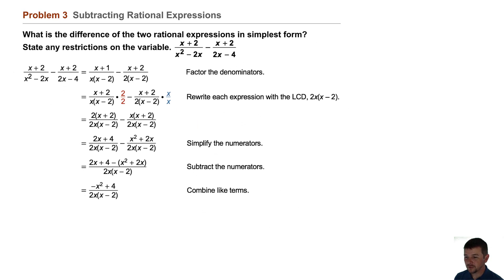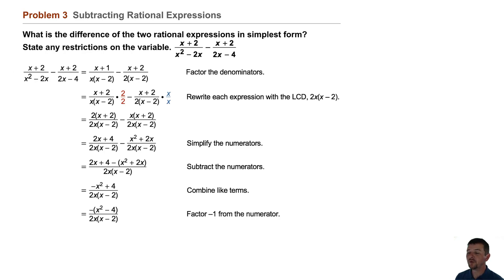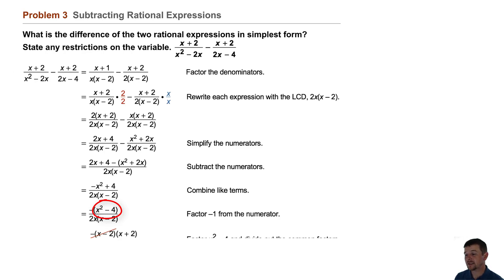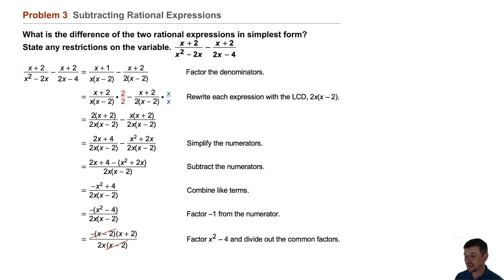In order to further reduce, we can factor a negative 1 from the numerator. When we do that, we get the negative of x squared minus 4 over 2x times x minus 2. Note the numerator — the binomial in parentheses — is a difference of squares, so it factors nicely as x minus 2 times x plus 2. So our numerator is the negative of x minus 2 times x plus 2, over that common denominator 2x times x minus 2.